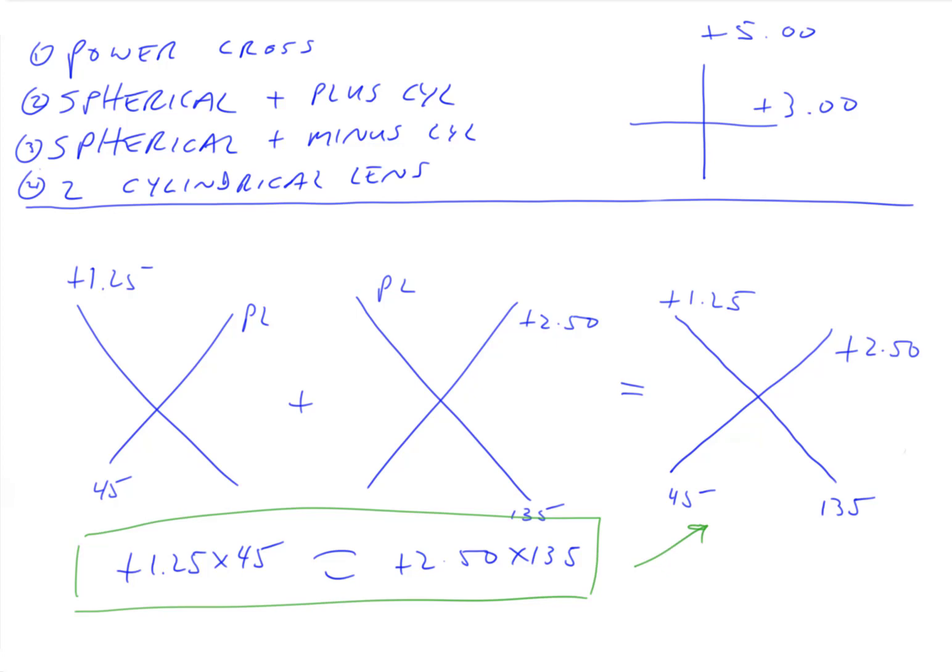So the last few lectures now we've really talked about toric lenses. We've drawn them out with a power cross. We've figured out how to build it using a spherical and a plus cylindrical lens, using a spherical and a minus cylindrical lens, and using just cylindrical lenses. Now let's do some practice problems in the next presentation to really kind of drive things home. Thanks.